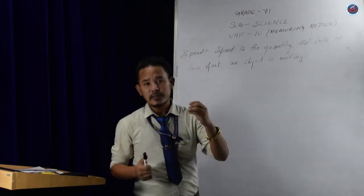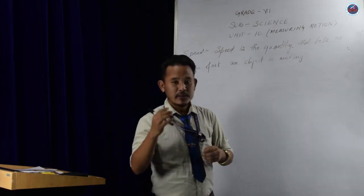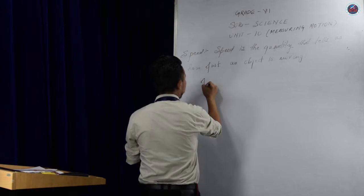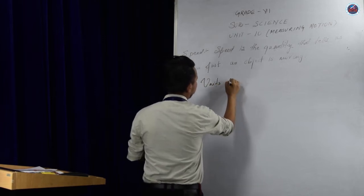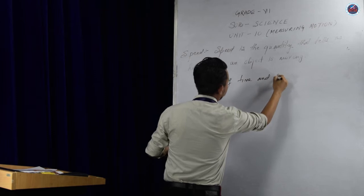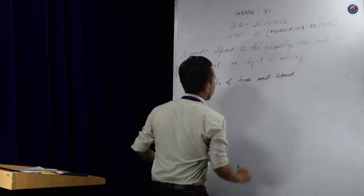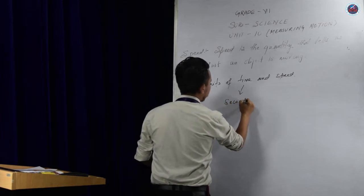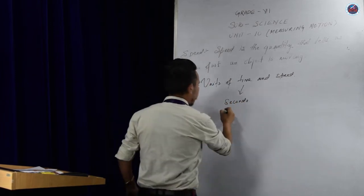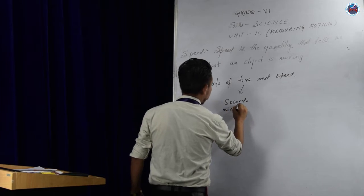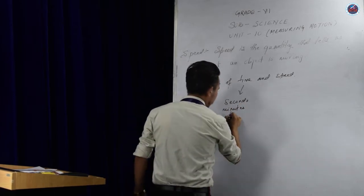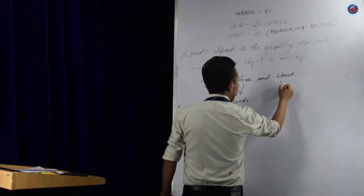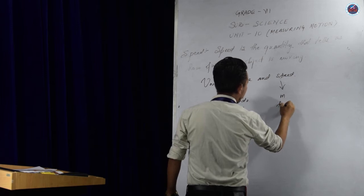So, let's try to know a little bit more. Remember the units of time and speed. Time is measured as seconds, minutes, and hour. For speed, we use the unit as meter, kilometer.